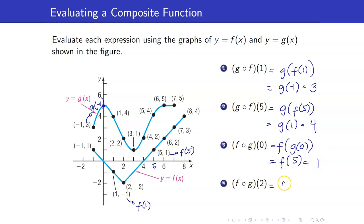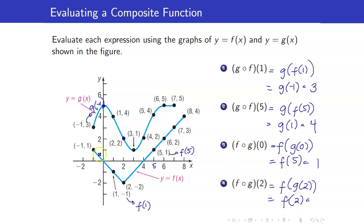Next, f circle g of 2 is f of g of 2. For g of 2, here is g, and when x is equal to 2, y is equal to 2. And f of 2 — looking at f when x is equal to 2 — your y is negative 2.